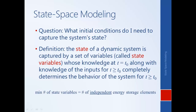It turns out, and it will be somewhat intuitive, that the minimum number of state variables needed to capture a system state is equal to the number of independent energy storage elements. The energy stored in the system at a current instant affects the behavior of the system going forward. So if we can determine the energy that's stored, we can determine what's going to happen in the future.